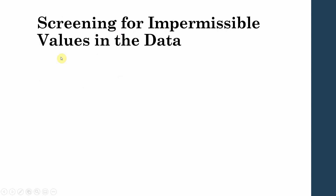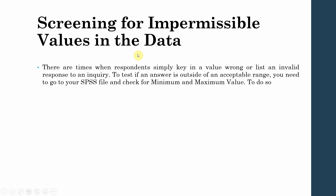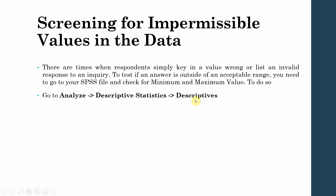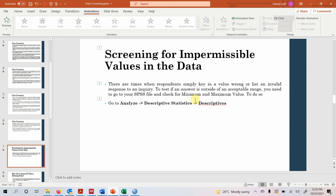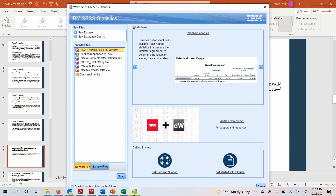Now, screening for impermissible values in the data. There are times when a respondent keys in a value incorrectly or lists an invalid response. To test if an answer is outside an acceptable range, go to your SPSS file and check for minimum and maximum values by going to Analyze > Descriptive Statistics > Descriptives. Let's go to our SPSS file — open SPSS, open another file, and click Open.